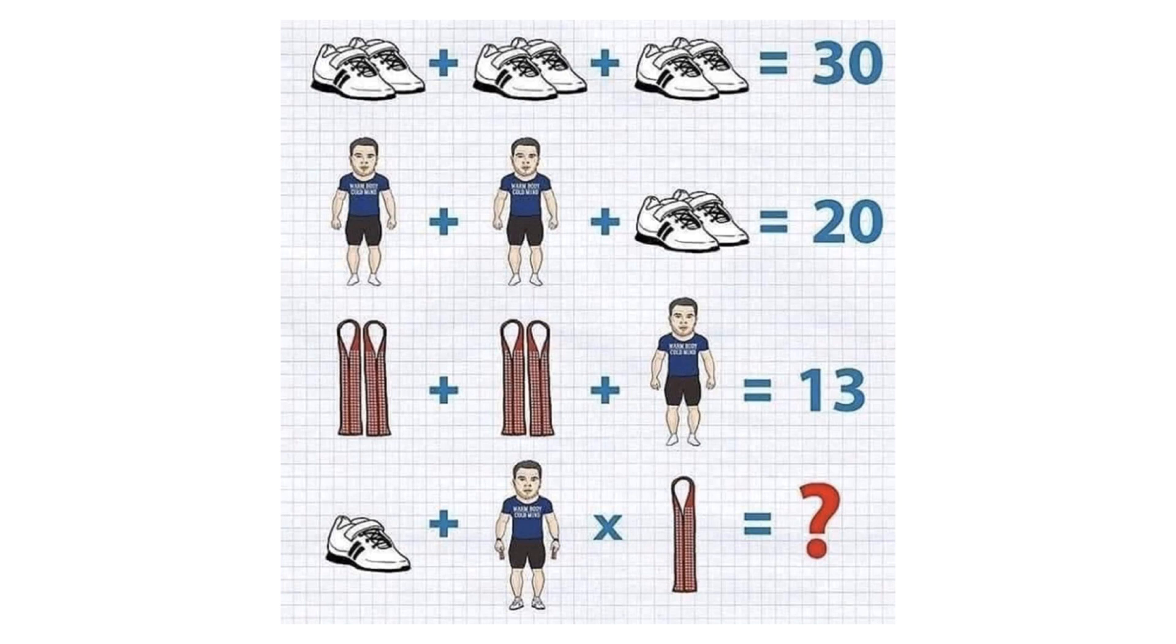According to the image, it is given that pair of shoes plus pair of shoes plus pair of shoes equals 30, man plus man plus pair of shoes equals 20, pair of tie plus pair of tie plus man equals 13. We are supposed to find the value of single shoe plus man multiplied with single tie.